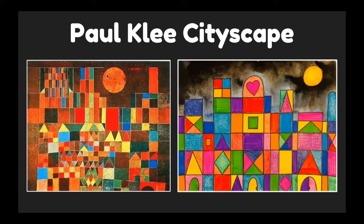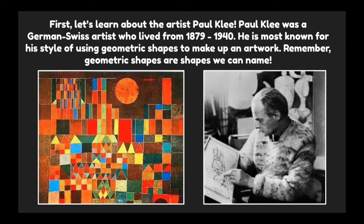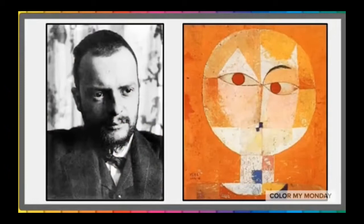Let's make a cityscape inspired by the artist Paul Klee. Here is a painting made by Paul Klee, and here is an example of our project. First, let's learn about the artist Paul Klee. Paul Klee was a Swiss artist who lived from 1879 to 1940. He is most known for his style using geometric shapes to make up an artwork. Remember, geometric shapes are shapes that we can name, like a square, circle, triangle, or rectangle.